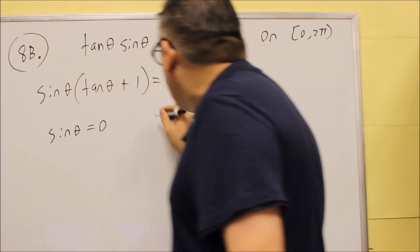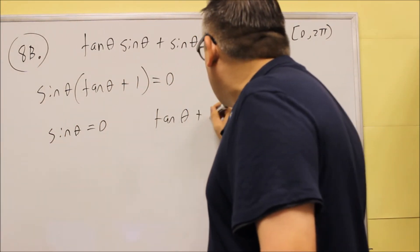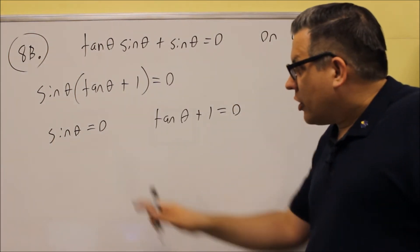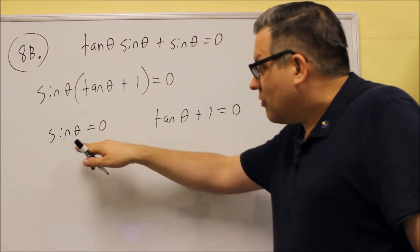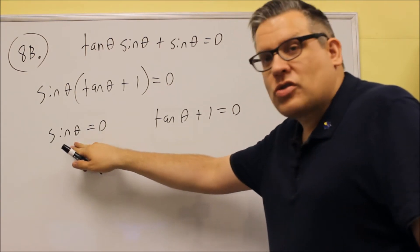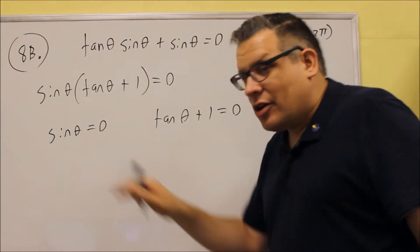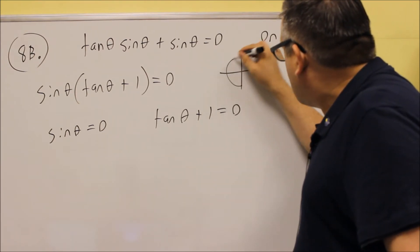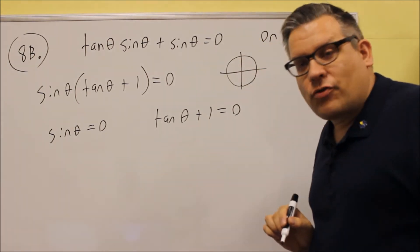So, sine theta equals 0, but tangent theta plus 1 also equals 0. We want to look on the unit circle for each of these, and first we'll look at any place in the unit circle where the y value equals 0. If we just draw a little unit circle here, just for reference,